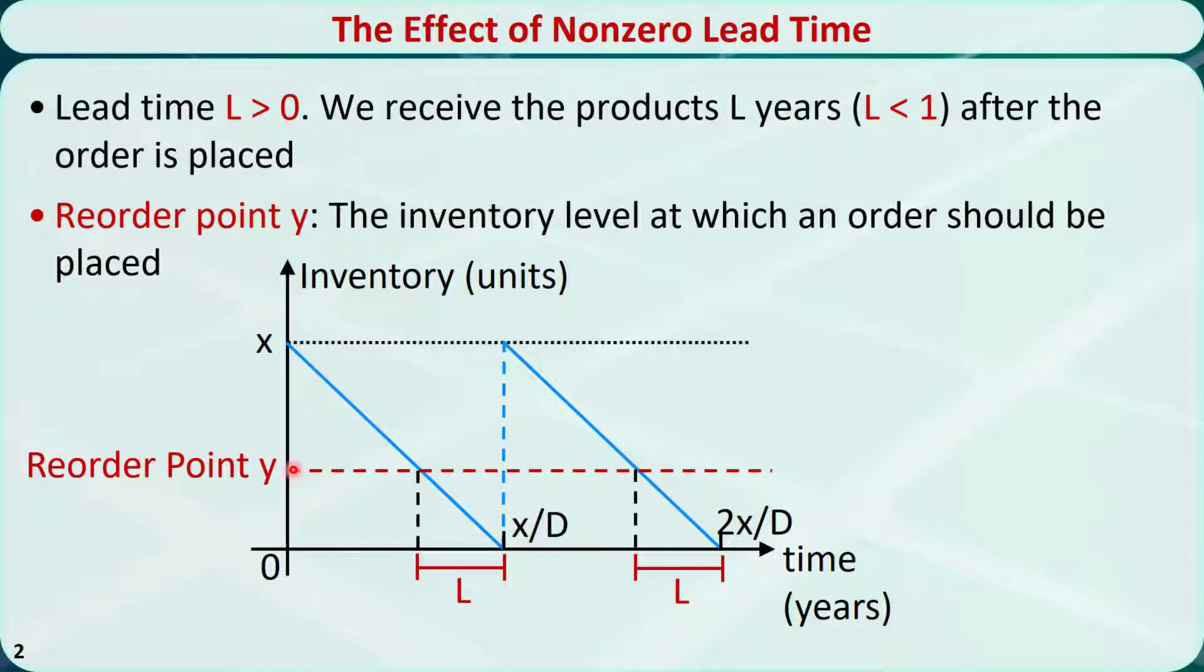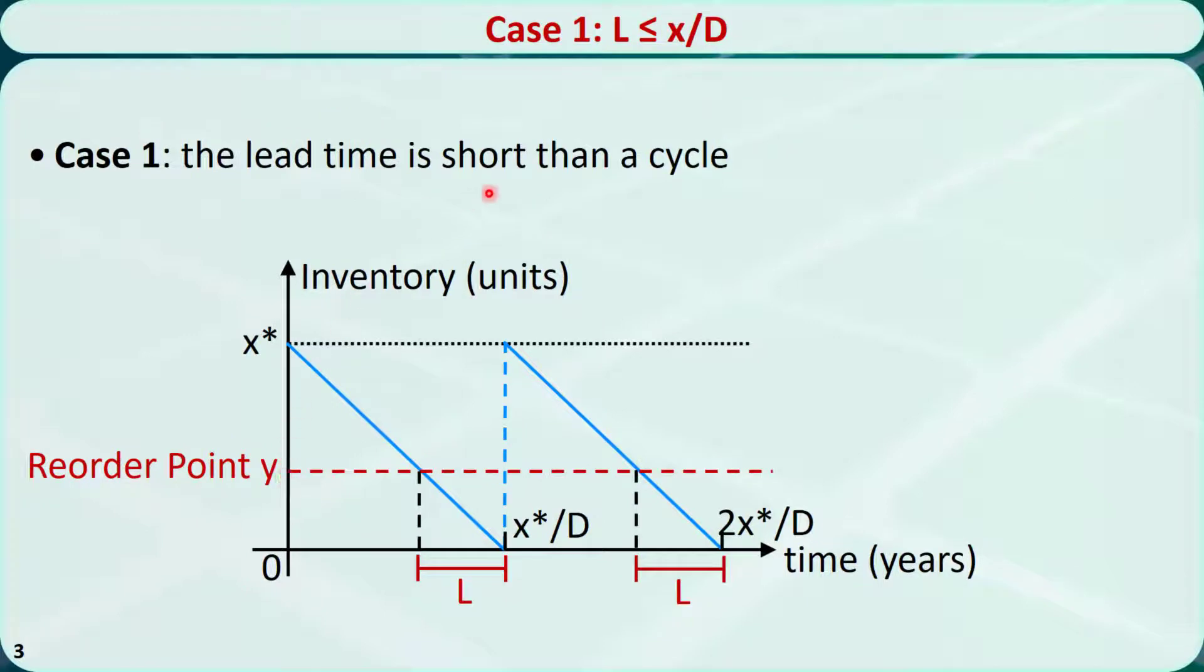To determine the reorder point y, we must consider two cases. Case 1: L is less than or equal to x over D. It means the lead time is shorter than a cycle.